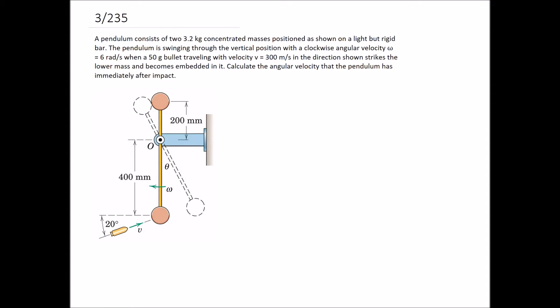A pendulum consists of two 3.2 kg concentrated masses positioned on a light but rigid bar. The pendulum is swinging through the vertical position with a clockwise angular velocity of 6 radians per second when a 50g bullet traveling with a velocity of 300 m/s in the direction shown strikes the lower mass and becomes embedded in it. Calculate the angular velocity that the pendulum has immediately after impact.